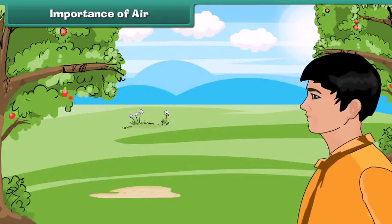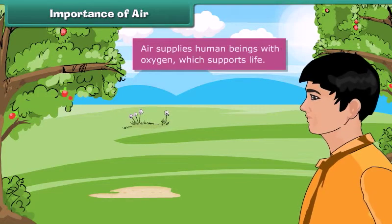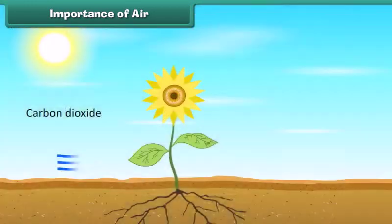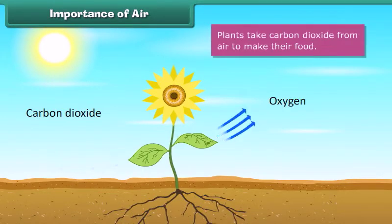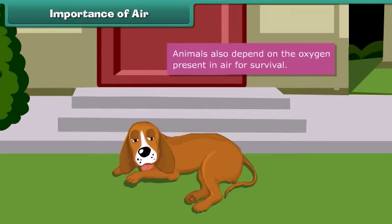Air supplies human beings with oxygen, which supports life. Plants take carbon dioxide from air to make their food. Animals also depend on the oxygen present in the air for survival.